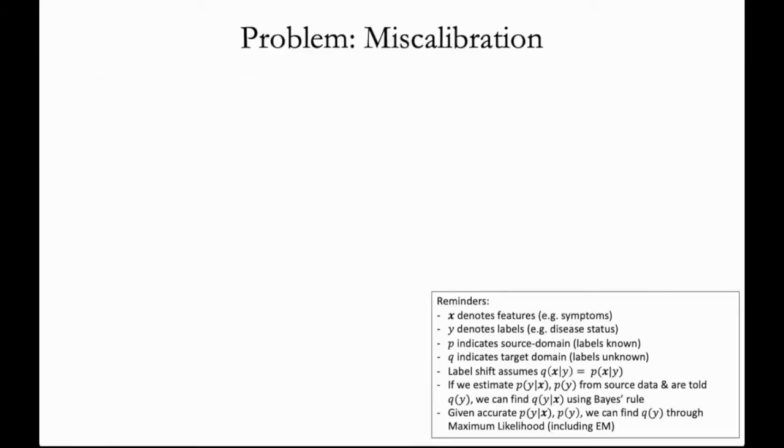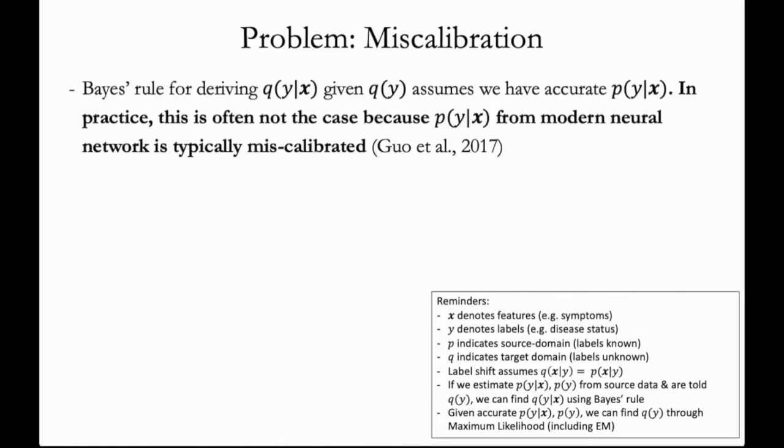The problem, as we alluded to before, is one of miscalibration. Applying Bayes' rule to obtain q(y|x) from q(y) assumes that we have accurate estimates of p(y|x). But in practice, this is often not the case because p(y|x) from modern neural networks are miscalibrated often.